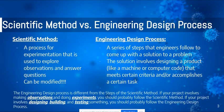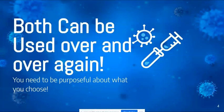The engineering design process is different from the steps of the scientific method. If your project involves making observations and doing experiments, you should probably follow the scientific method. If your project involves designing, building, or testing something, then you should probably follow the engineering design process. Both can be used over and over again, and sometimes you'll use both depending on what your project is.